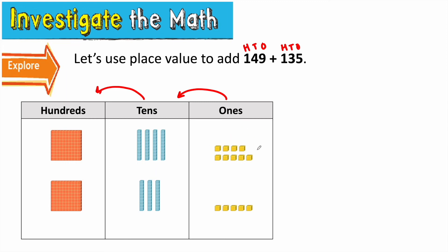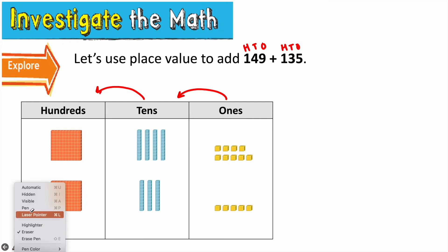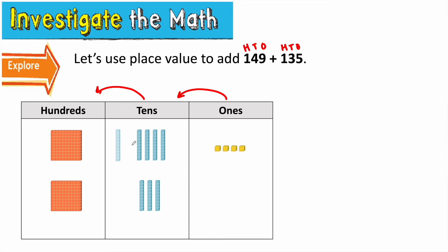So let's start by adding nine ones and five ones. Let's count on: nine, ten, eleven, twelve, thirteen, fourteen. So I have fourteen ones. I know that I can't put fourteen ones in the ones place — instead I have to regroup. It means I have to take ten single ones and regroup them into a new group of ten. After I regroup, I have four ones left over. That makes sense because fourteen has one ten and four ones, so I took my one ten to the tens place and kept my four ones in the ones place.